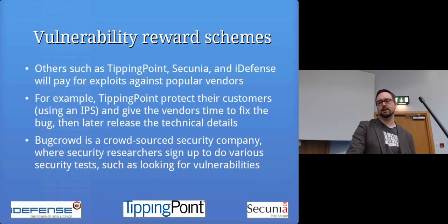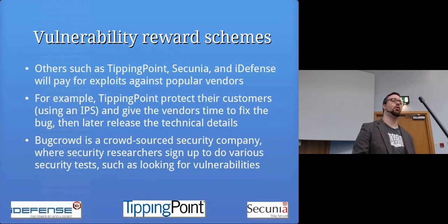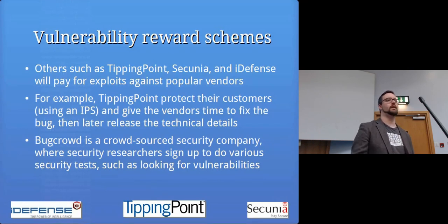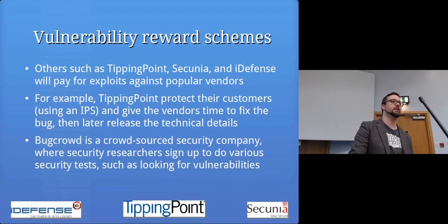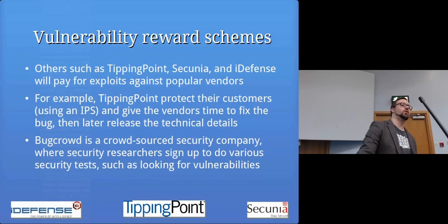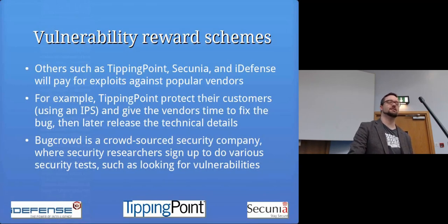Some companies will pay you for exploits against popular vendors — for example Tipping Point, which provides an Intrusion Prevention System. They release a detection for the attack immediately and tell the vendor how to fix it, so their customers are protected in the meantime. However, many vulnerability reward schemes sell vulnerabilities to third parties like government agencies — not necessarily ones you'd want. By selling to these companies, you're potentially giving various actors around the world access to zero days, which is not great.